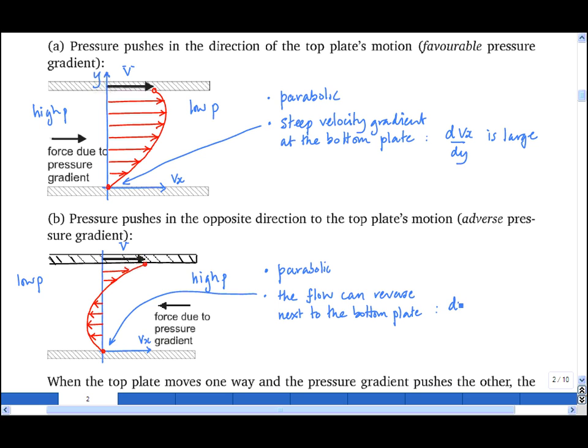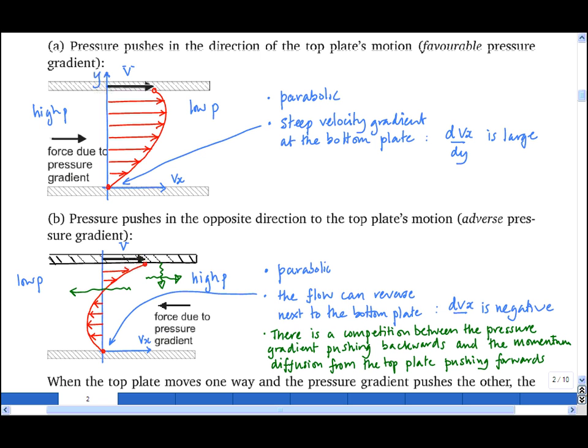By this I mean that dvₓ/dy is negative. One way to think of this is that the pressure gradient is trying to push the fluid backwards, while momentum diffusing downwards from the top plate is trying to push the fluid forwards. So there is a competition between the pressure gradient and momentum diffusion from the top plate.